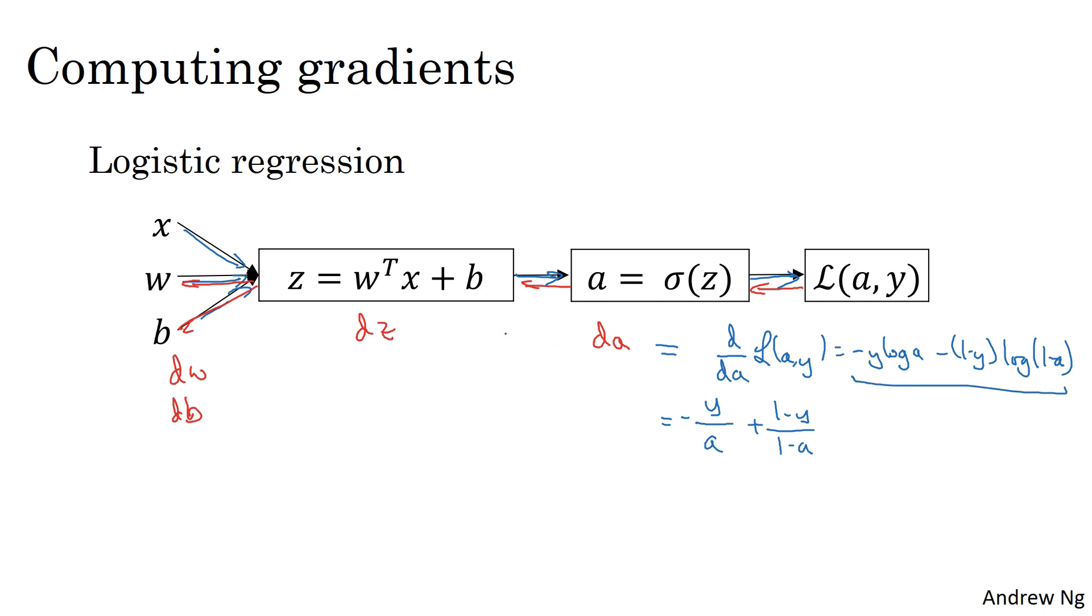It turns out when you take another step backwards to compute dz, we worked out that dz is equal to a minus y. I didn't explain why previously, but it turns out that from the chain rule of calculus, dz is equal to da times g prime of z, where g(z) equals sigmoid of z is our activation function for this output unit in logistic regression.